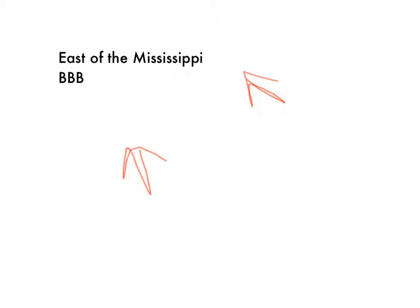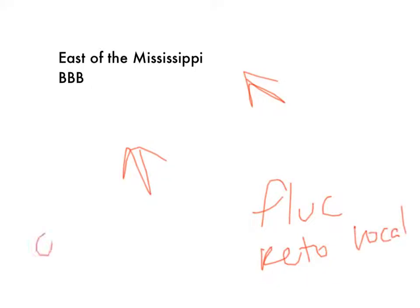You treat it with ketoconazole or fluconazole for a local infection, and amphotericin B for a systemic infection. So fluconazole and ketoconazole are for local infections. Amphotericin B is given IV and covers systemic fungal infections.